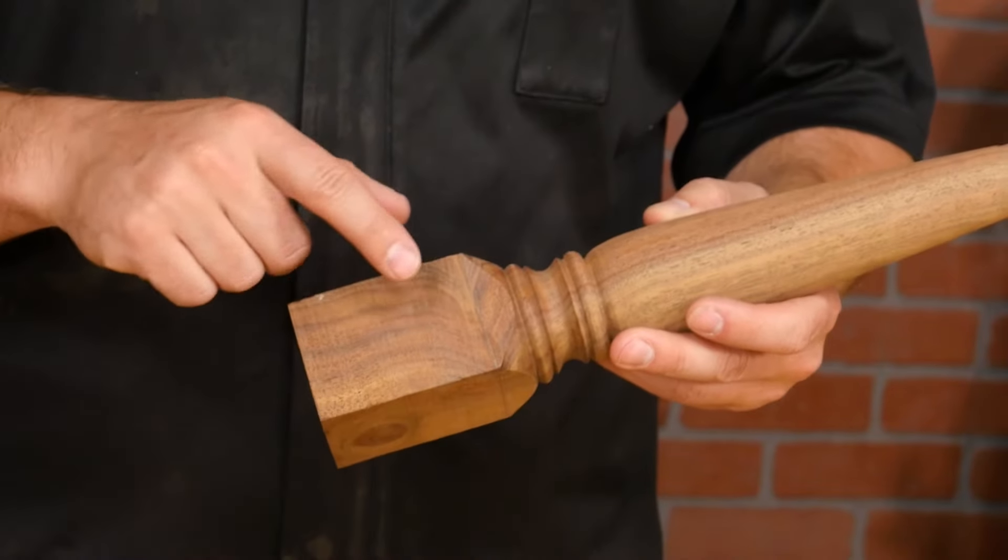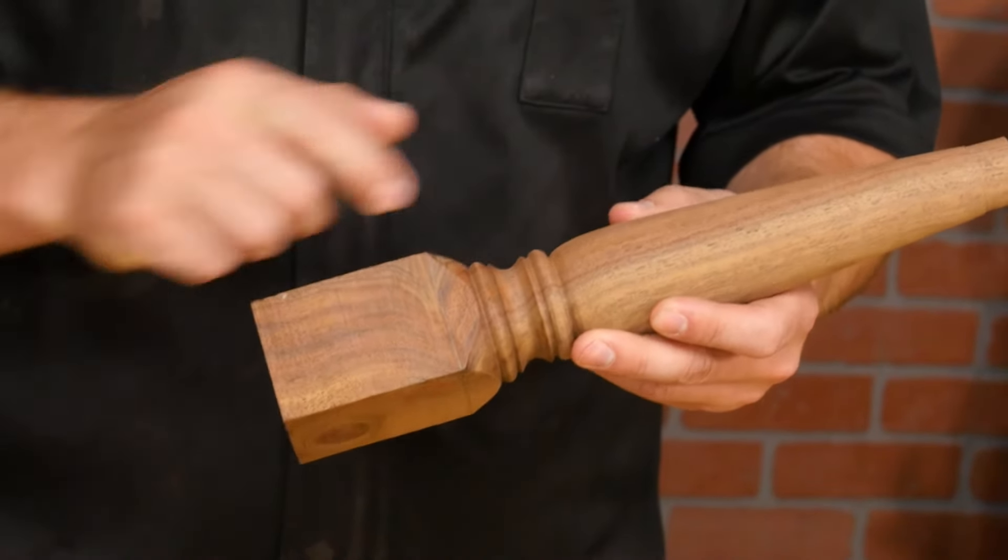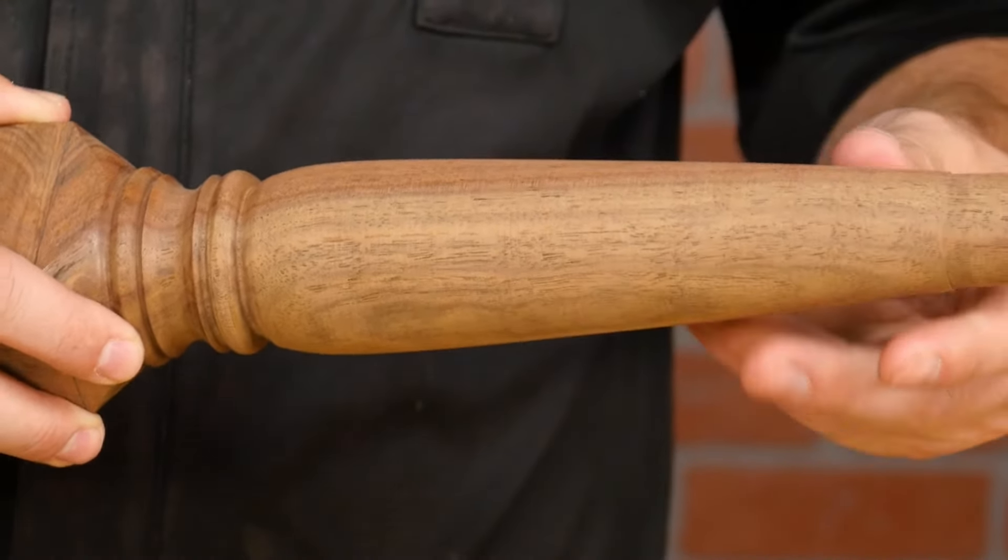The roughing gouge is designed to turn square stock round and I'll use it to turn nearly all of the pen. The skew chisel is used for final cuts and improves the surface finish while reducing the sanding required.